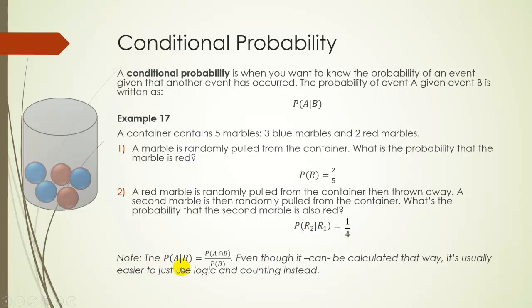A quick note here, the probability of A given B could be calculated by finding the probability of A and B and then dividing by the probability of B. It's rare that this is actually a useful formula to use, but it is something to keep in the back of your mind if you want to use it.